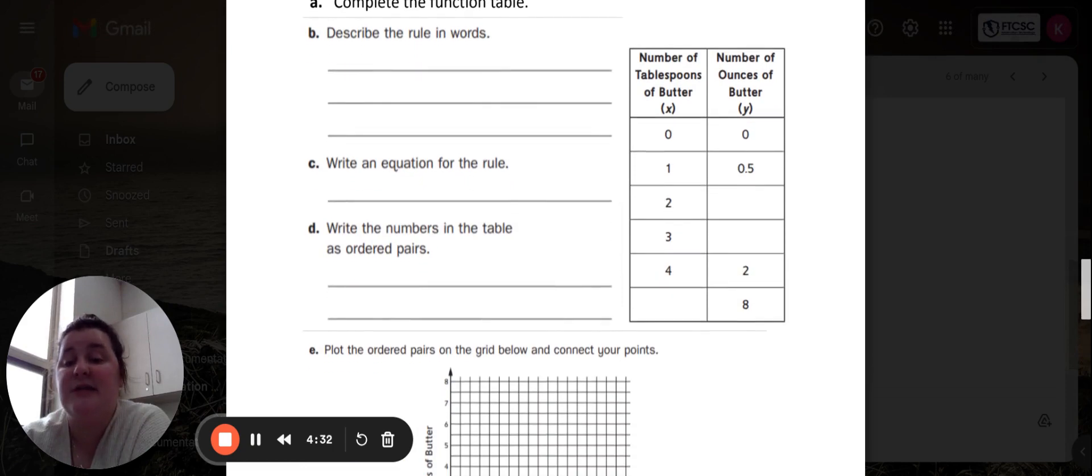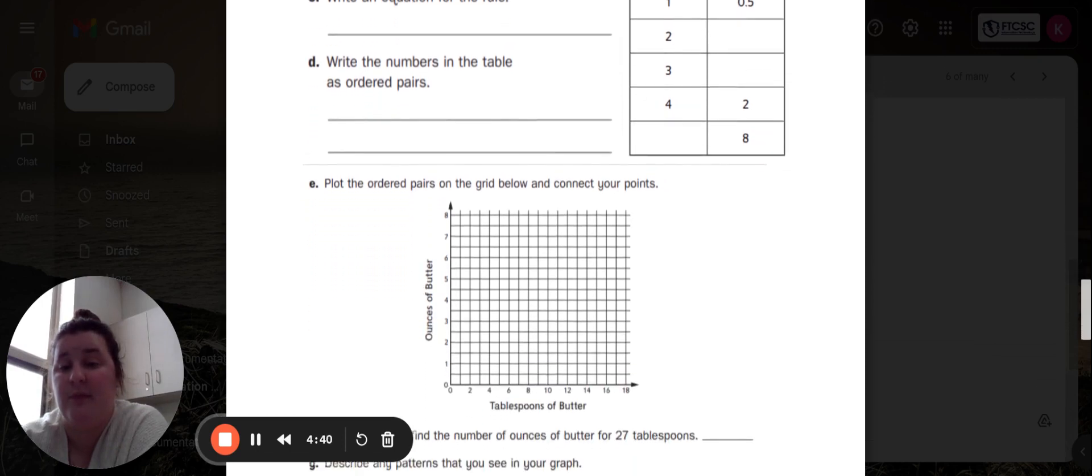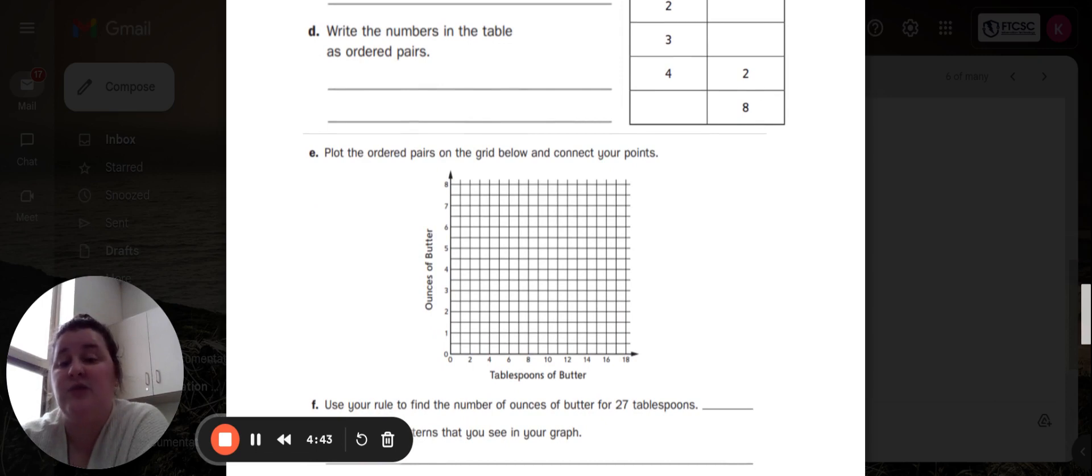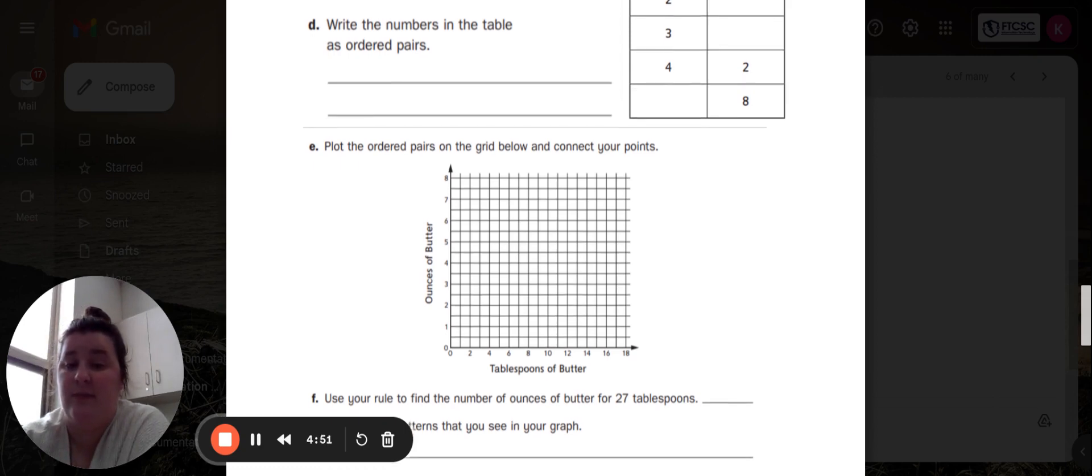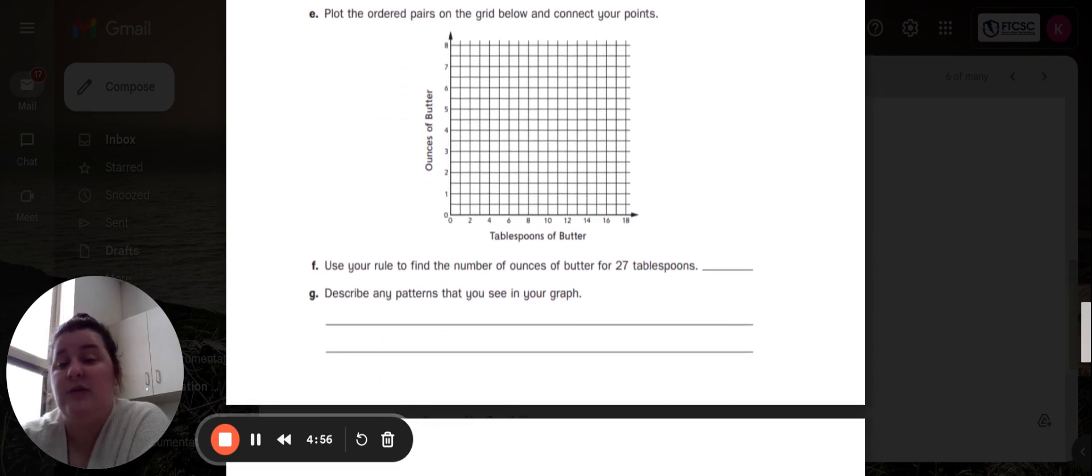In part C, it wants you to write an equation for the rule. And in part D, it wants you to write the numbers from your table as ordered pairs. Part E wants you to plot those ordered pairs on the grid below and connect your points.